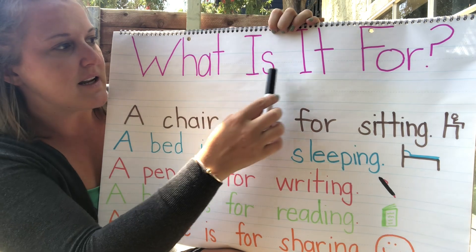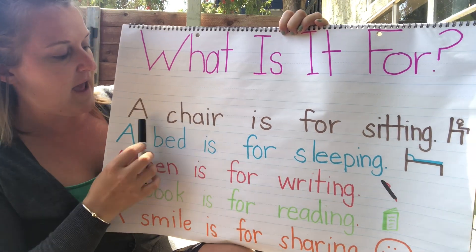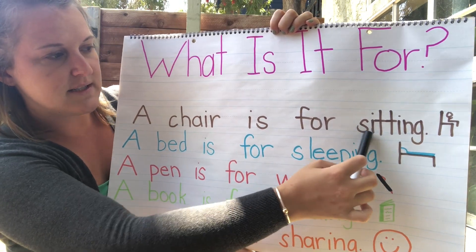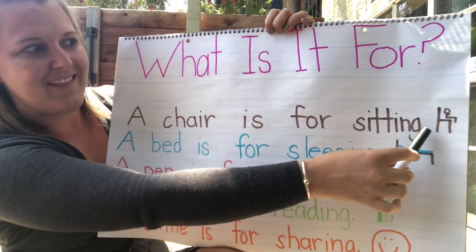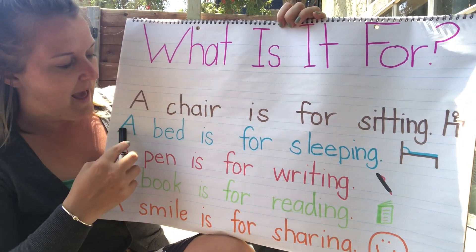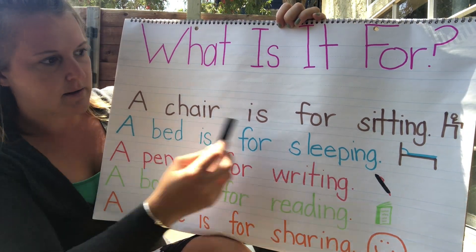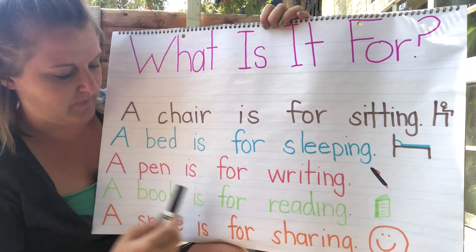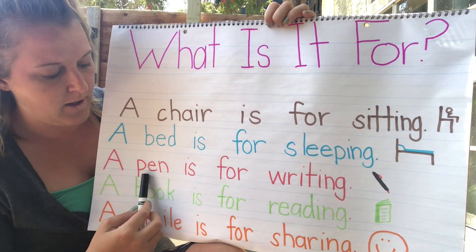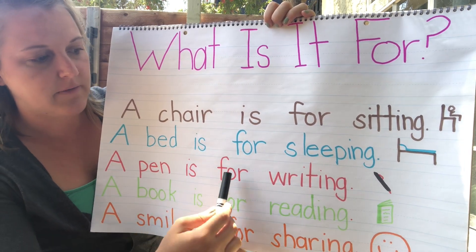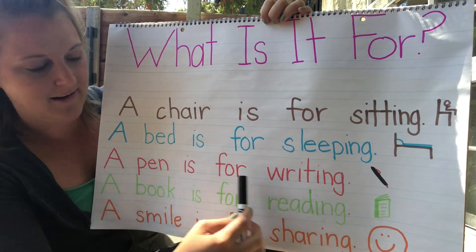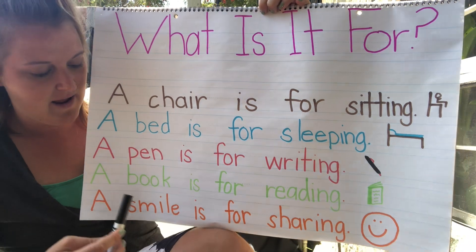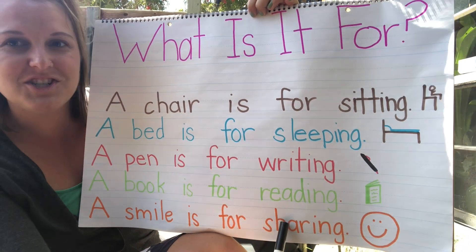What is it for? A chair is for sitting. That's right, I can check the picture. A bed is for sleeping. A pen is for writing. A book is for reading. A smile is for sharing.